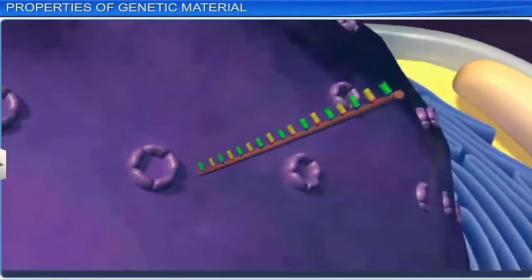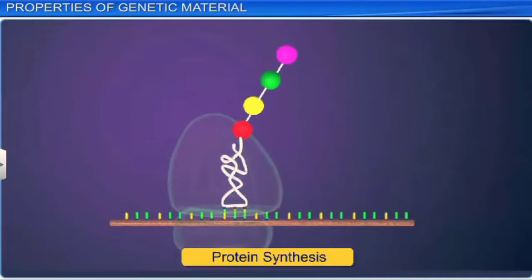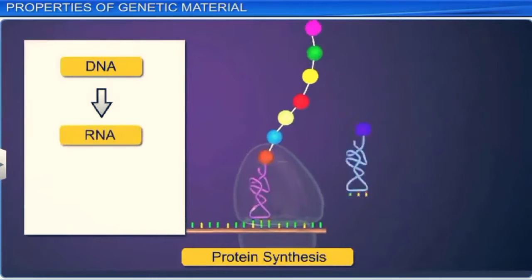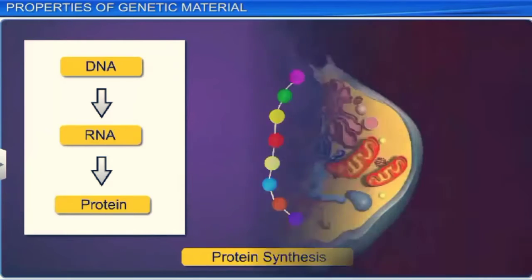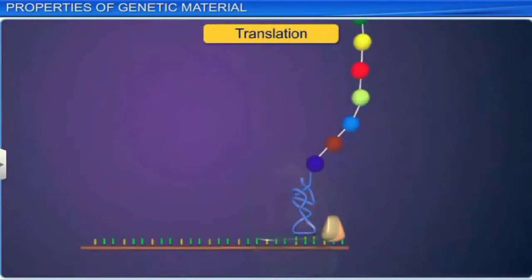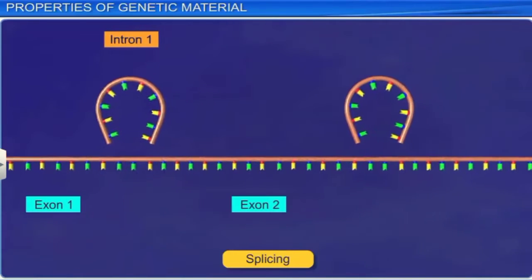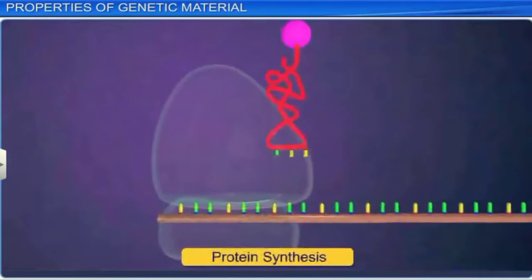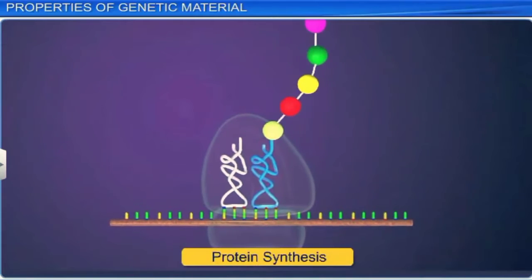RNA can directly code for protein synthesis, and thereby easily express the characters. In this regard, DNA is dependent on RNA. Not only protein synthesis, but also several essential life processes such as translation and splicing are evolved around RNA. Therefore, even though DNA is the preferred genetic material due to its stability, it is the RNA that is involved in the transmission of genetic information.